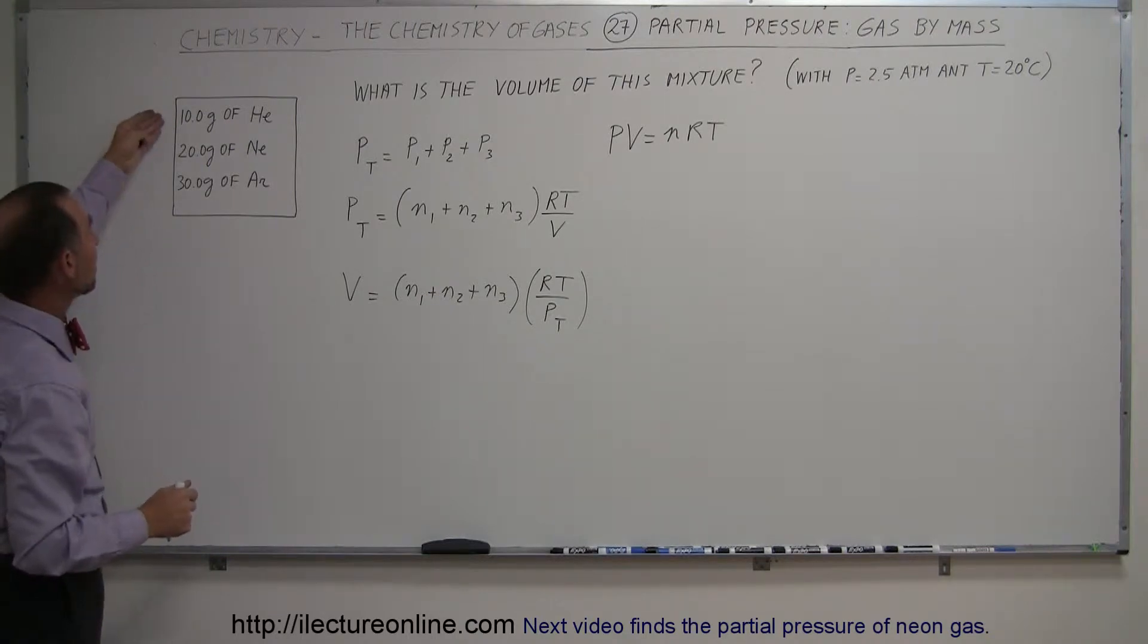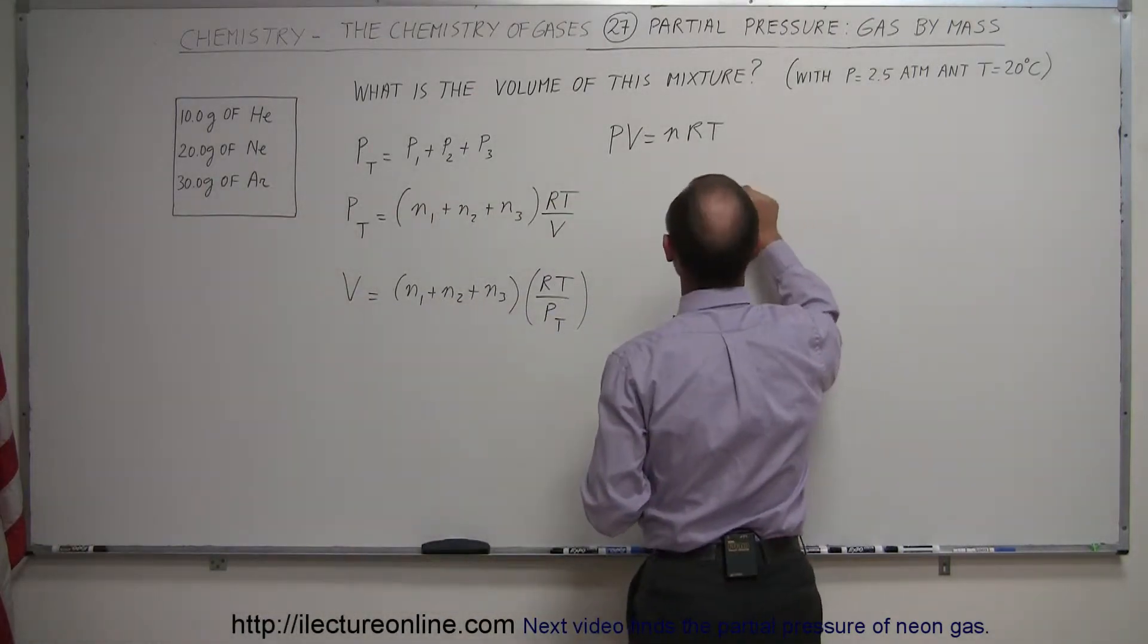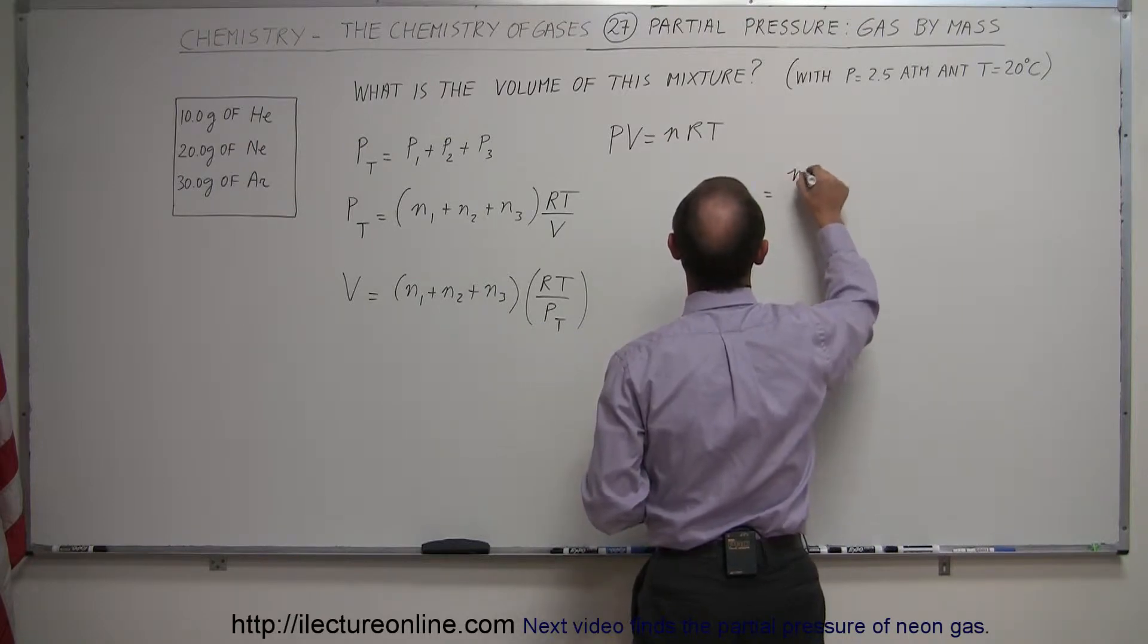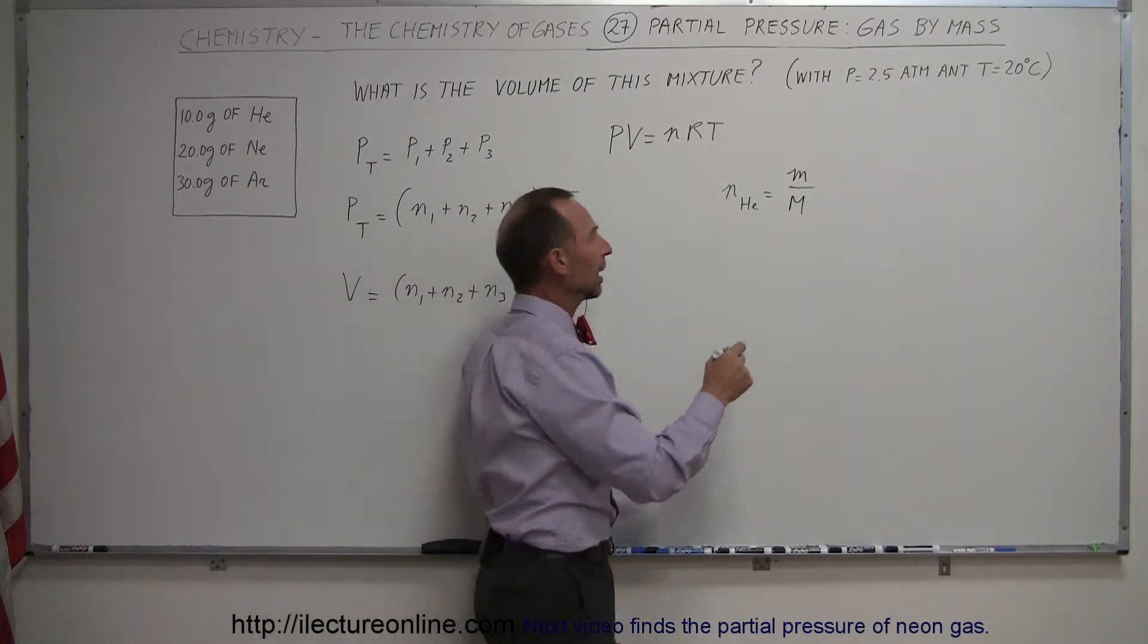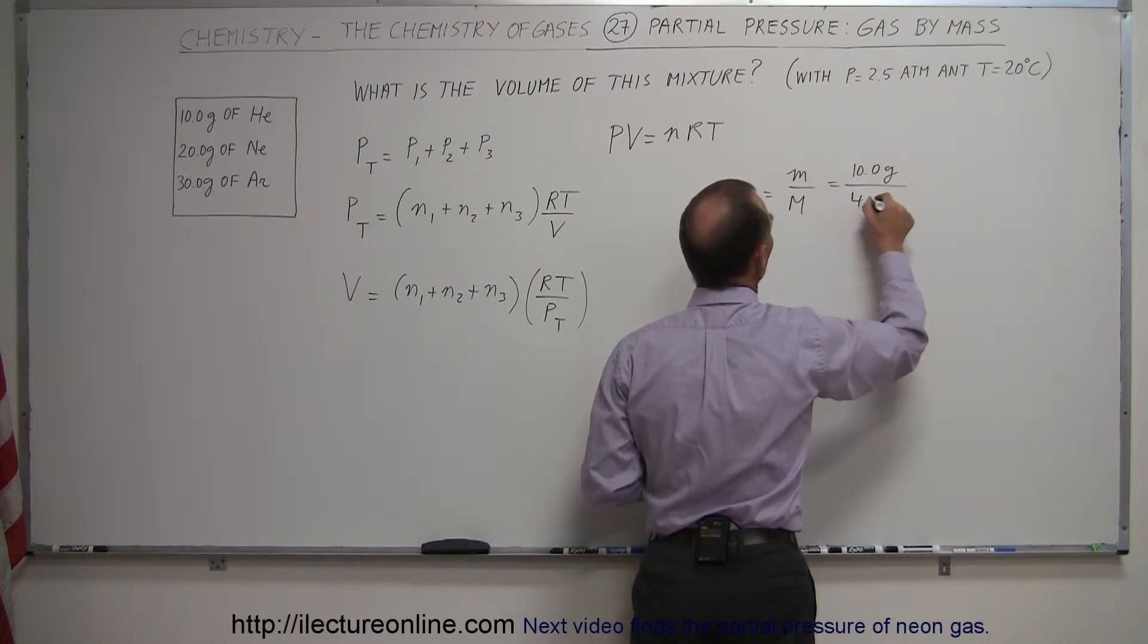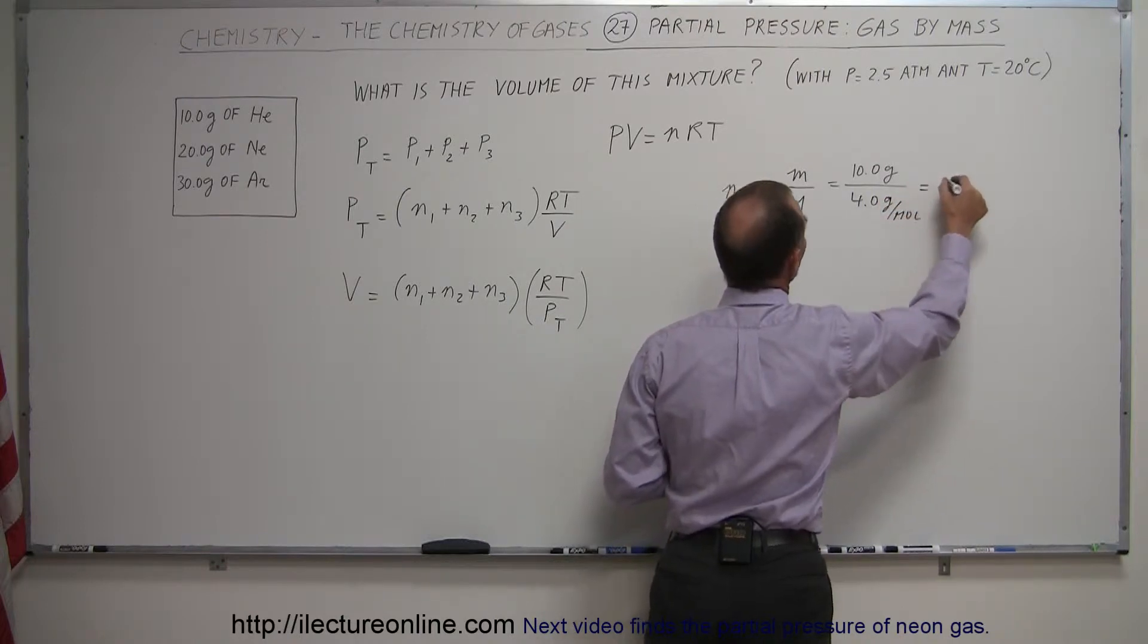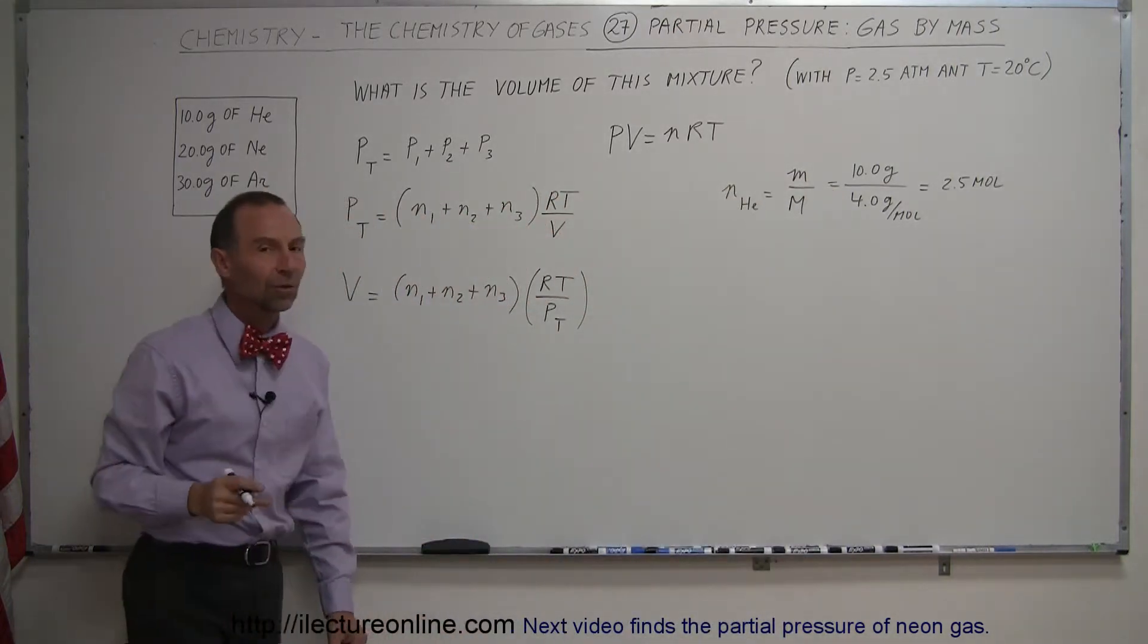Since we're given the mass of each gas, we can use that to calculate the number of moles. N of helium equals the mass of the gas divided by the molar mass, the mass per mole. For helium, that equals 10.0 grams divided by 4.0 grams per mole, which equals 2.5 moles of the gas.